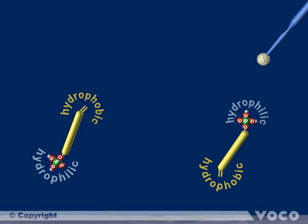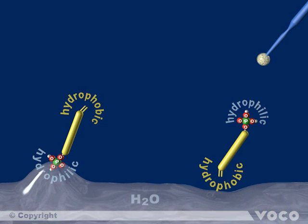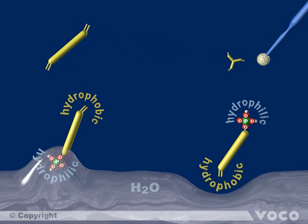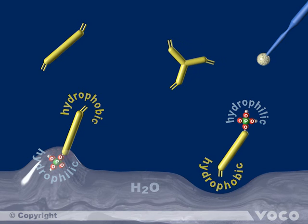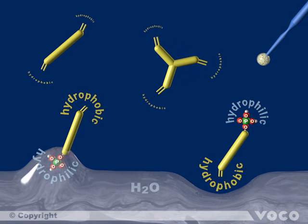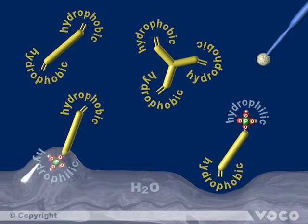On the other hand a hydrophobic part, which means water-repellent, which builds up the chemical connection to the composite. Furthermore, there are included cross-linking monomers that are responsible for the entire curing of the material. They are totally hydrophobic and connect the hydrophobic parts of the adhesive monomers, as well as the hydrophobic composite material.